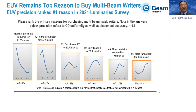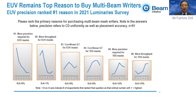Number three and four are curvilinear ILT shapes, either on EUV or 193i. In the progression from the 2020 to the 2021 survey, what was formerly number four became number three — EUV and 193i were flipped back then.